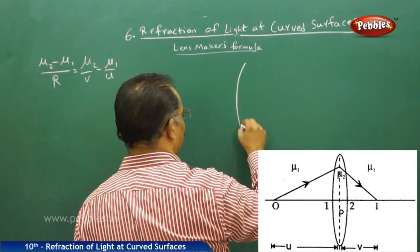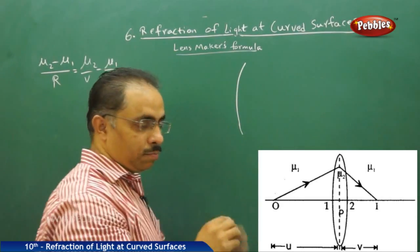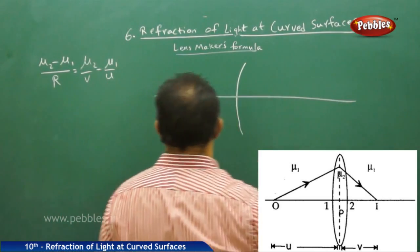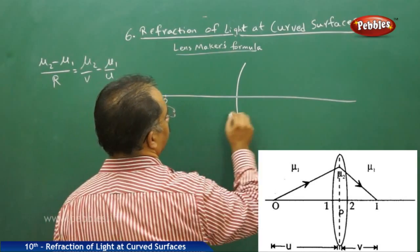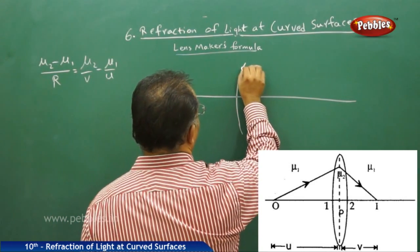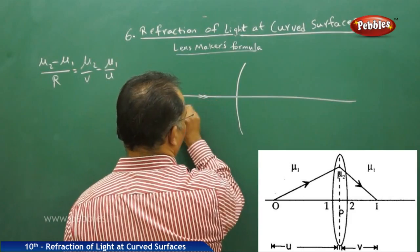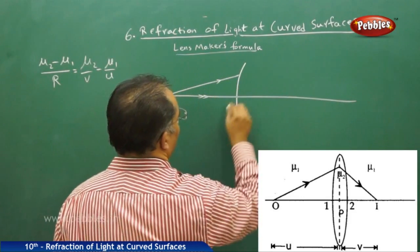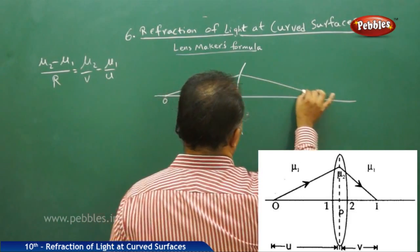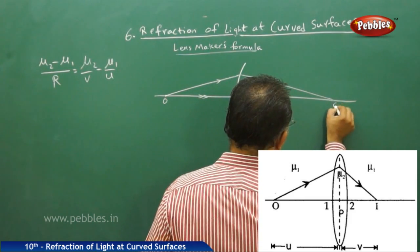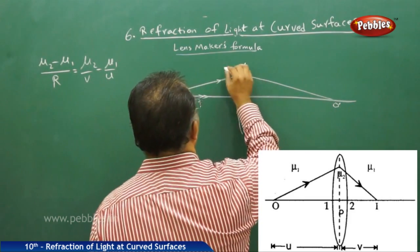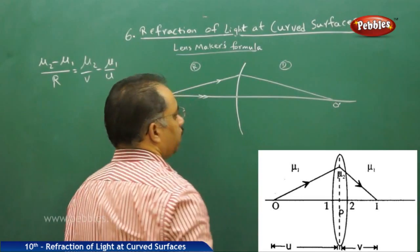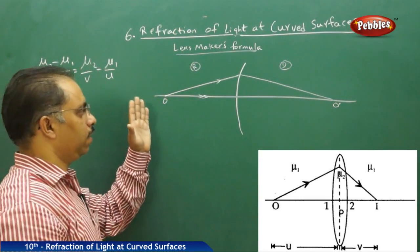We will take a convex lens. Out of two surfaces of a convex lens, the first surface is drawn here along with the principal axis. O is the object. I take one light ray passing straight along the principal axis and one more light ray that gets refracted and forms an image, O dash. This is the rarer medium and this is the denser medium. The light ray is travelling from rarer to denser.